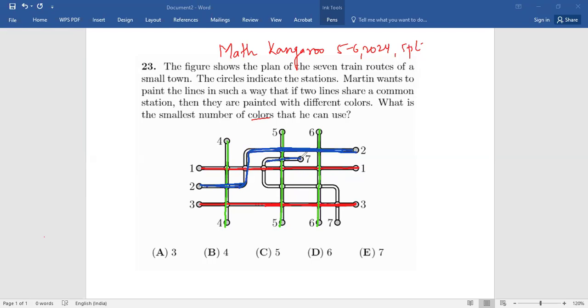So two and seven are not sharing any common stations. So if you read the question again, Martin wants to paint the lines in such a way that if two lines share a common station, then they are painted with different colors.